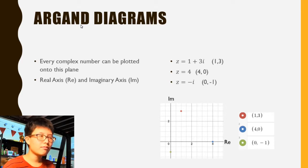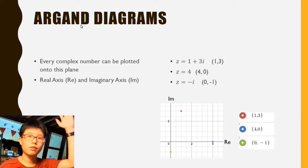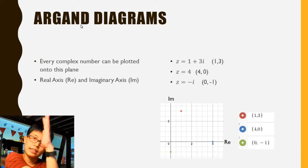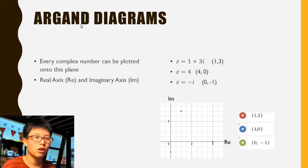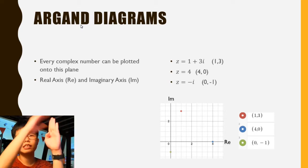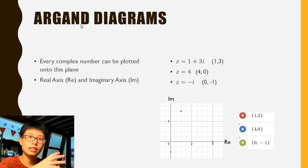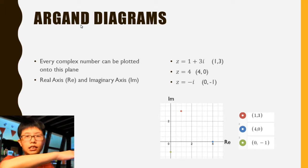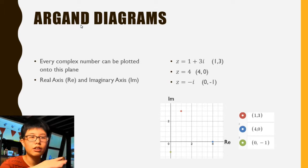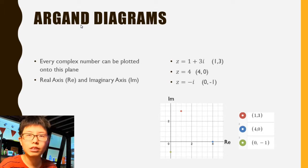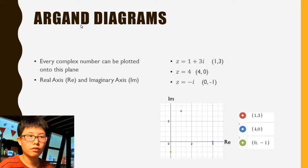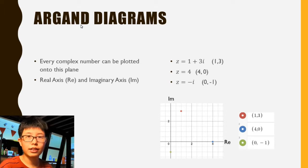So Argand diagrams — every complex number can be plotted onto an Argand diagram. It's basically where you normally have a y-axis and an x-axis, but in the Argand diagram they change it: instead of the vertical axis being y, they change it to the imaginary part, and the x-axis, usually called x, is now labelled as the real part. All complex numbers have a real part and an imaginary part.